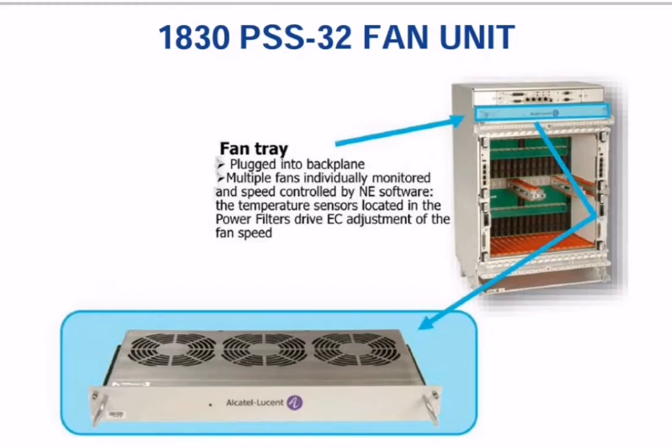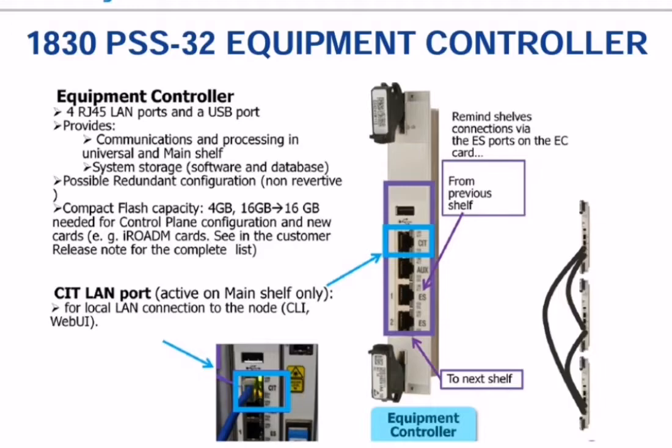The next one is the equipment controller card, which is installed at slot one. This equipment controller card contains four ports: the first one is CIT, the second one is auxiliary, the next ports are ES1 and ES2. The CIT port is used for login, and we connect this CIT port with an RJ45.